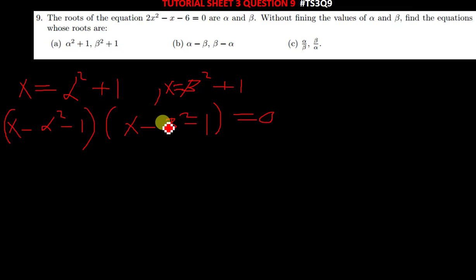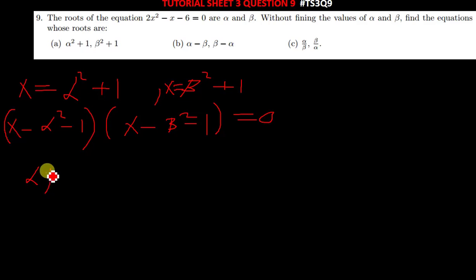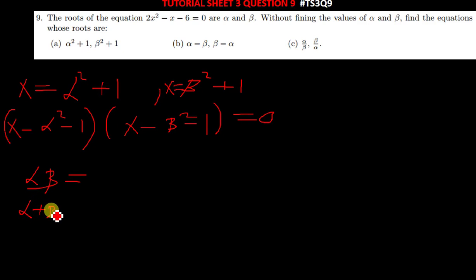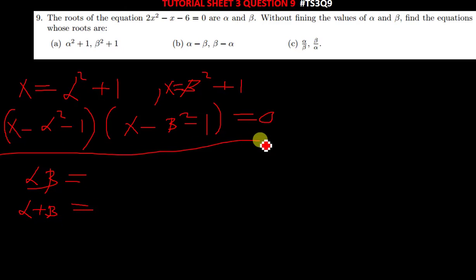From there, it's just multiplication. You multiply the two brackets, then after multiplying you find α·β and α + β. After finding those, you replace them in the answer you get after multiplying. This is basically how you solve such a question.